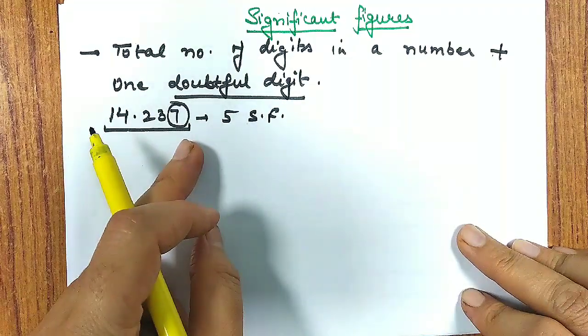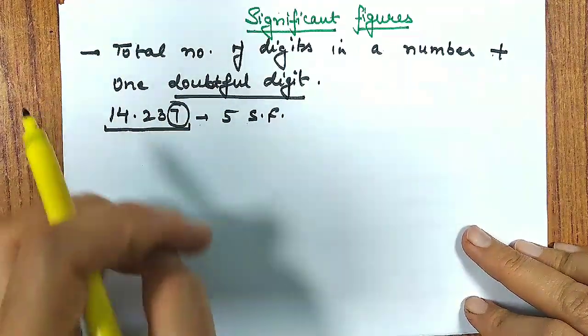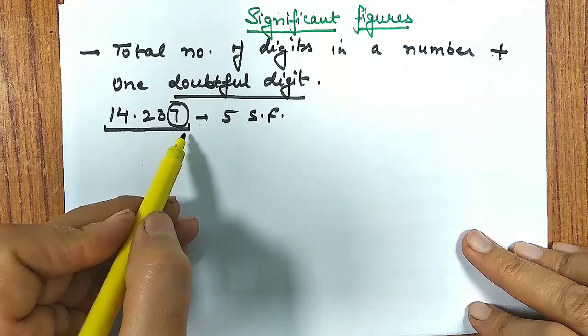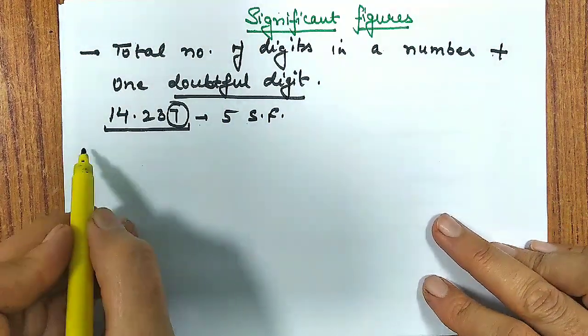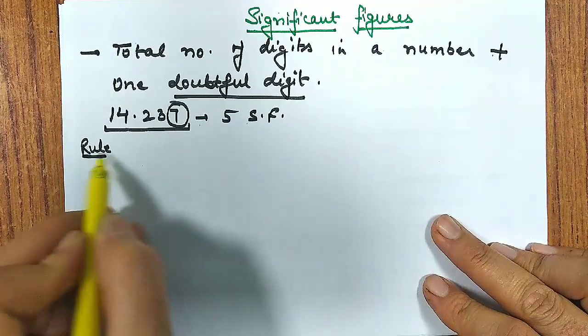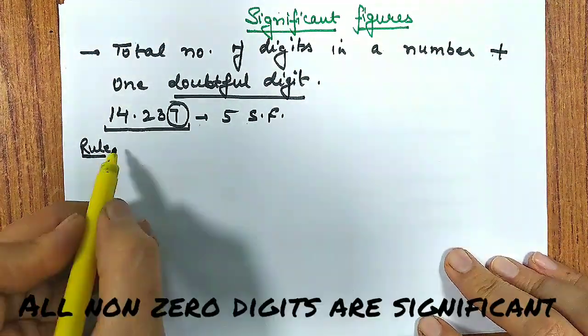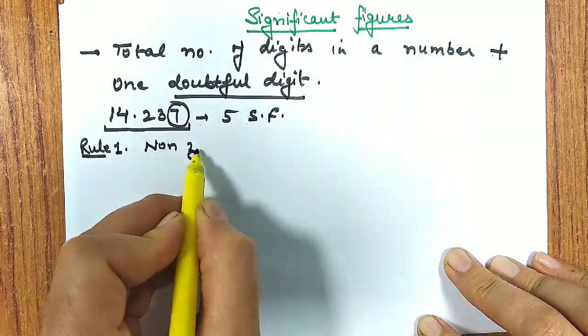Doubtful means there is no certainty that the last digit is correct. So it is total number of digits which includes this doubtful digit. If I say the significant figure is 14.237, and if I ask you how many significant figures it has, it has one, two, three, four, five - five significant figures.